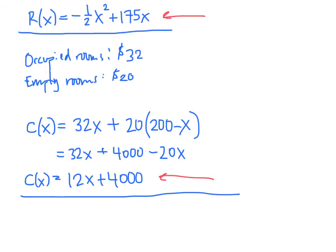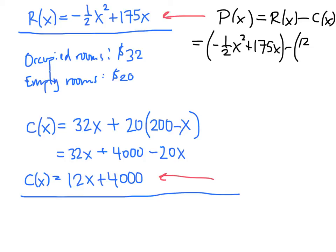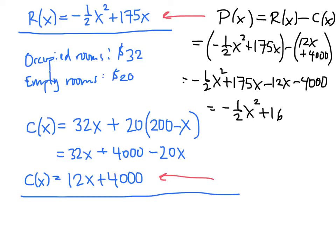And our profit formula is revenue minus cost. So P of X equals R of X minus C of X. And we have to be careful. Whenever we do this, whenever we subtract a cost function, we're subtracting the entire cost function, which means we're going to need parentheses. So we get negative 1 half X squared plus 175 X minus parentheses, 12X plus 4,000. So that means we have negative 1 half X squared plus 175 X minus 12X minus 4,000. When we collect our like terms, we get negative 1 half X squared plus 163 X minus 4,000. So there's our profit function.